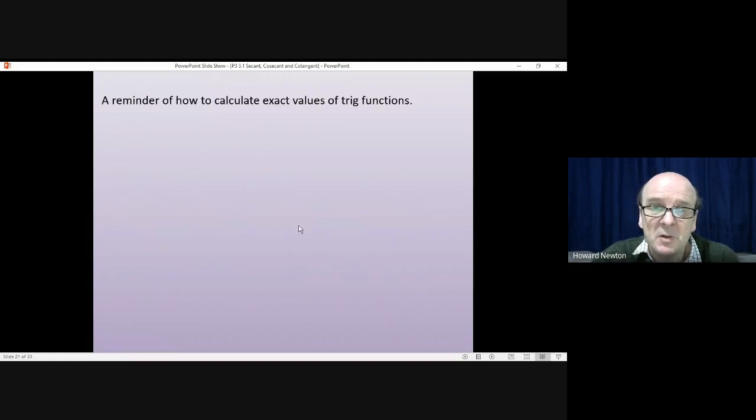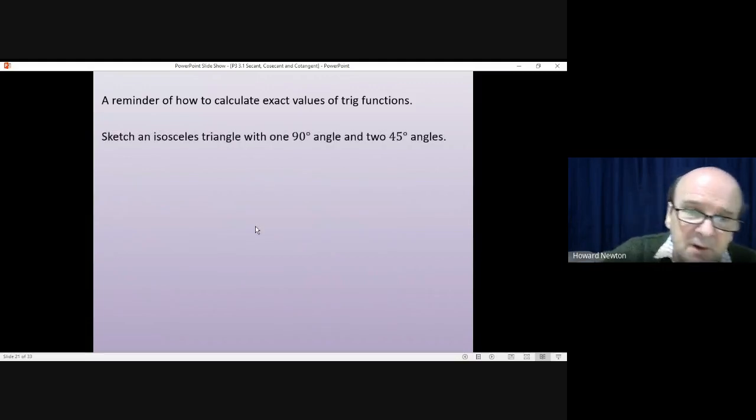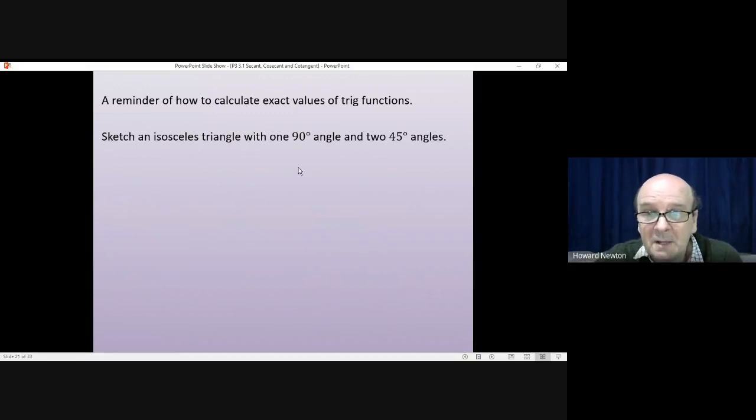The other angles you're supposed to know are 45 degrees, 0 and 90. We'll just look at 45 for the moment. To work out what happens with 45 degrees, you sketch an isosceles triangle, where one angle is a right angle, and the other two are 45 degrees. So something like that. Set the side to equal 1. You'll have a right angle here, and these two angles will be 45.